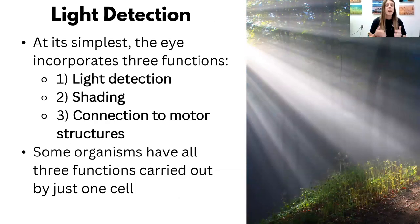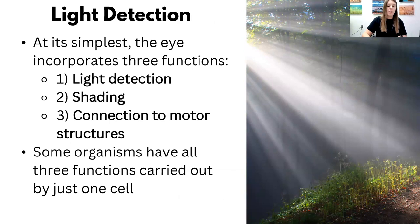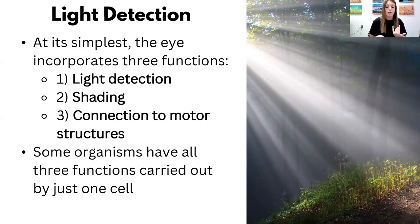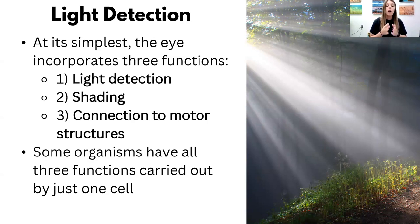At its simplest, what does the eye do? The three functions of an eye are: light detection; shading — meaning in the form of a dark pigment that can sense which direction light is coming from; and a connection to motor structures, so there can be movement in response to that light. Some organisms have all three functions, some do not, but some of the ones that do have all three carry them out with just one single cell.